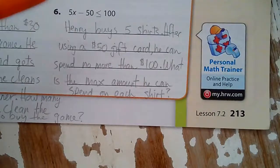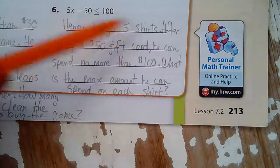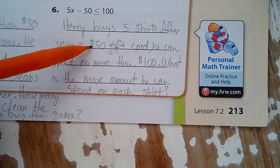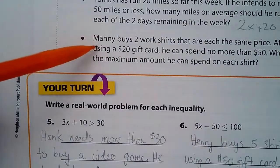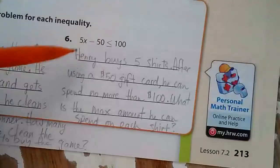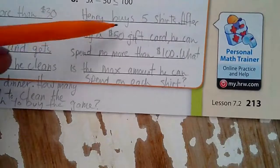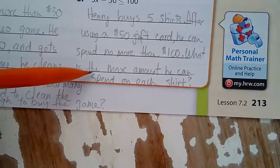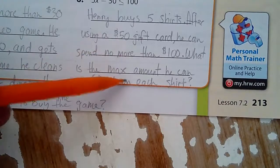In this one, Henry buys five shirts. Okay, so he buys those five shirts. After using a $50 gift card... Ooh, it sounds so much like this right here. After using a $50 gift card, he can spend no more than $100. What is the max amount he can spend on each shirt? There you go. That is covered by this inequality right here.